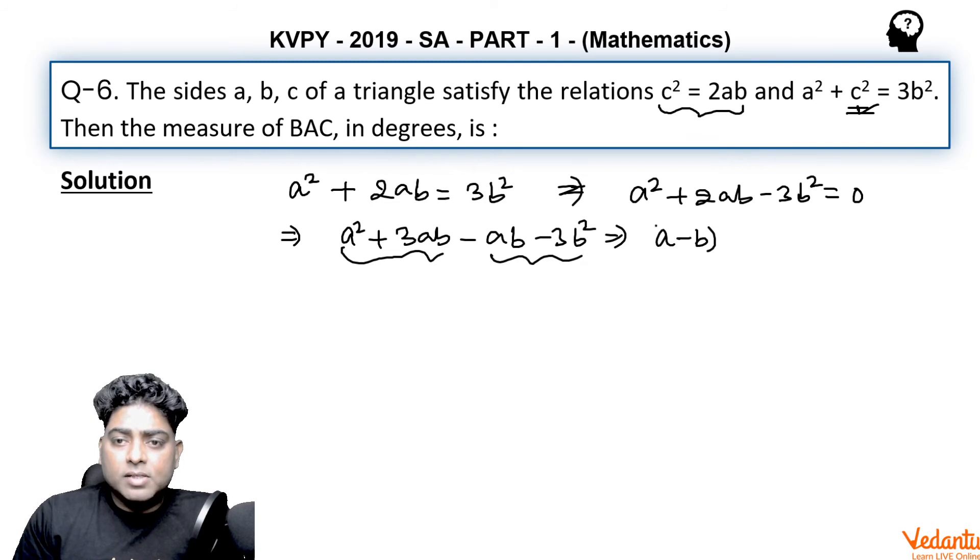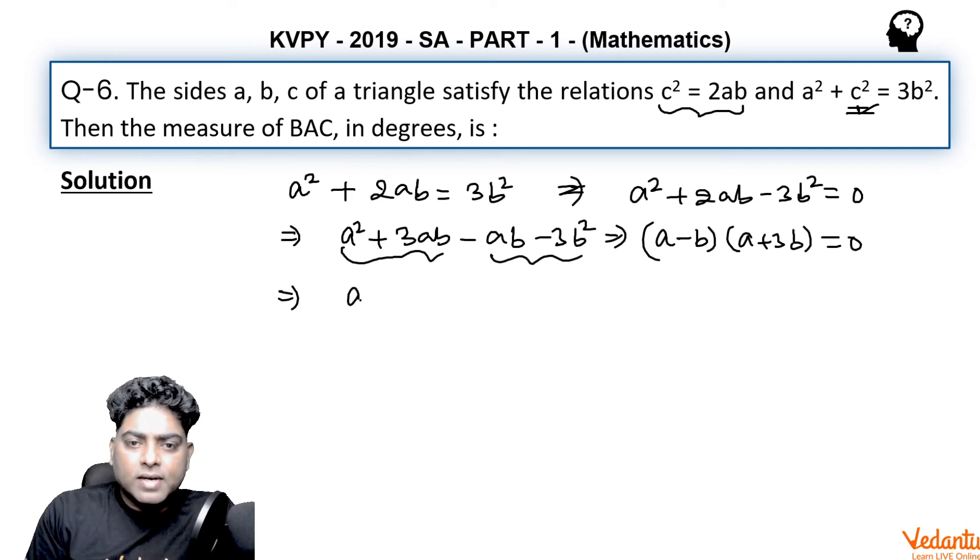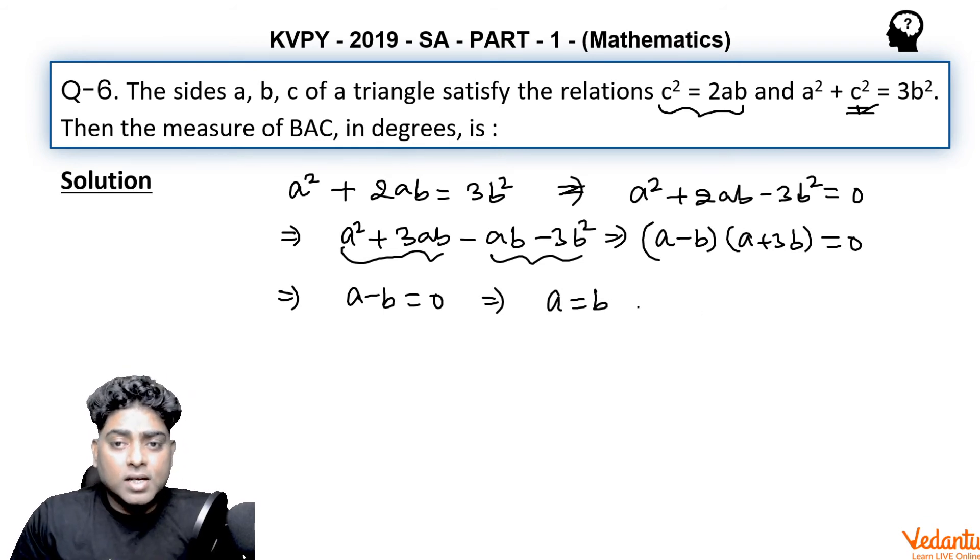So (a - b) and (a + 3b) are coming as two factors. But as we know that the sides of a triangle can never be negative or zero, a + 3b is always positive. So this factor is not going to be zero. It implies the first factor a - b = 0, which says a = b. The triangle is isosceles.